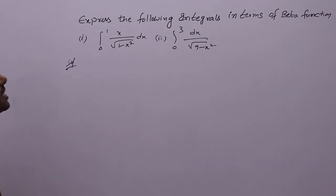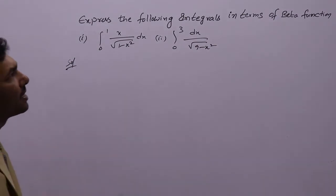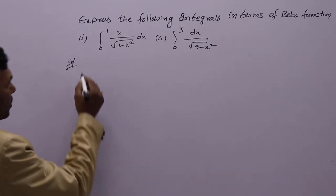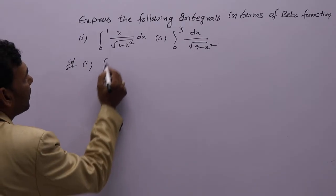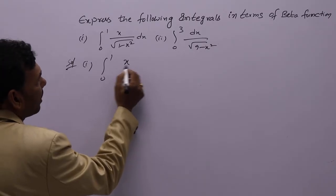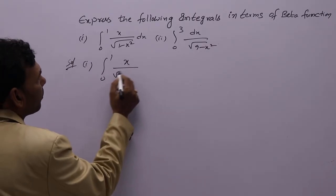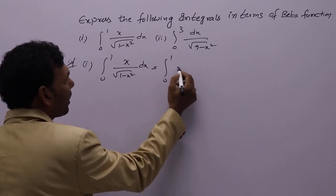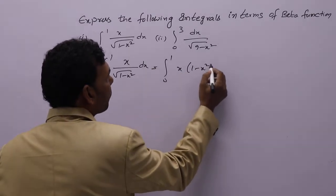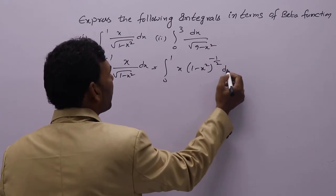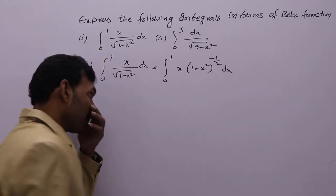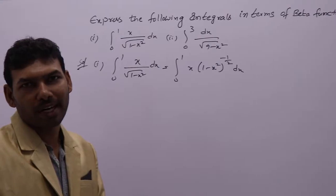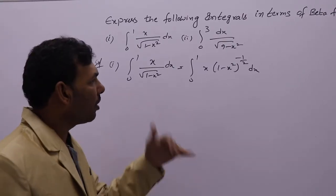So now, we need to express these integrals in terms of beta. For that, the first one I am taking my integral 0 to 1, x by root 1 minus x square dx, which can be written like this: 1 minus x square whole power 1 by 2 dx. The root can be written as whole power 1 by 2, and if you take it to the numerator, it becomes minus 1 by 2.